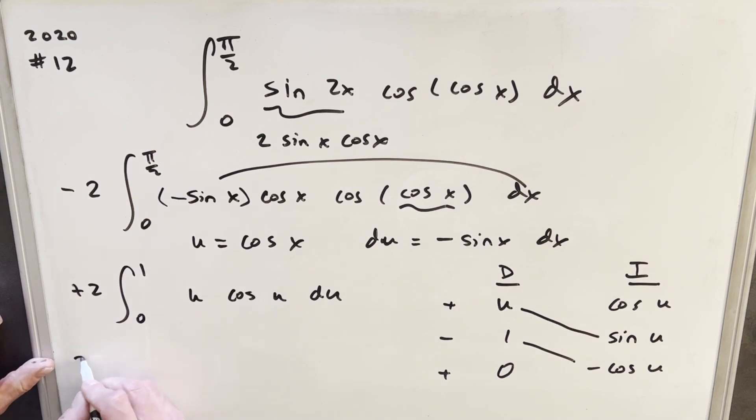Okay, so let's see what we're left with. We'll have our two out front here, u sine u. And then for this next term, our minus and minus are going to cancel, and we're going to have just a plus cosine of u. And we just need to evaluate this from 0 to 1.